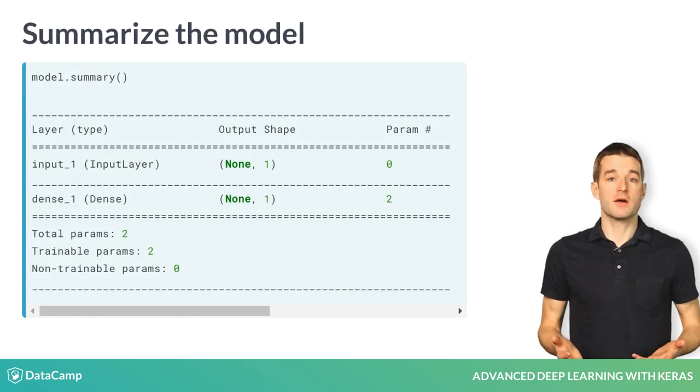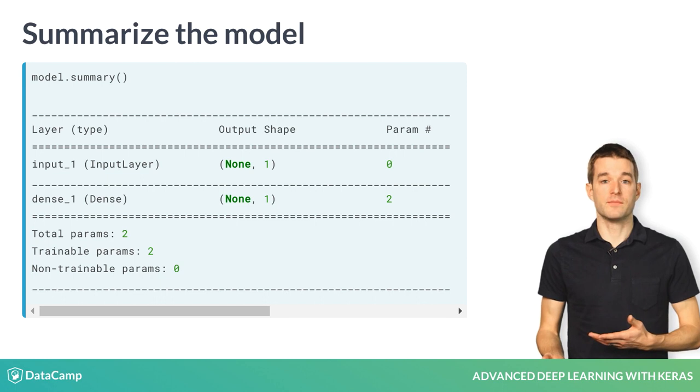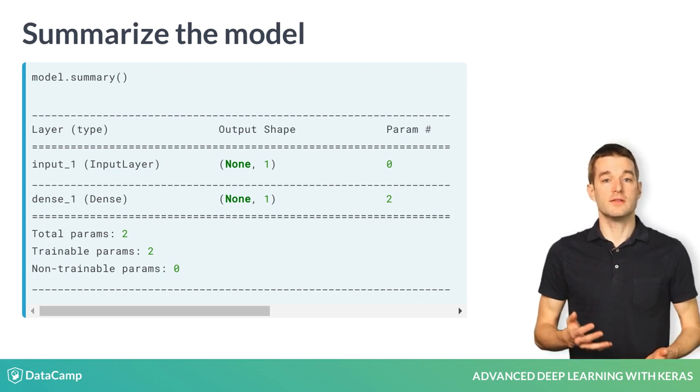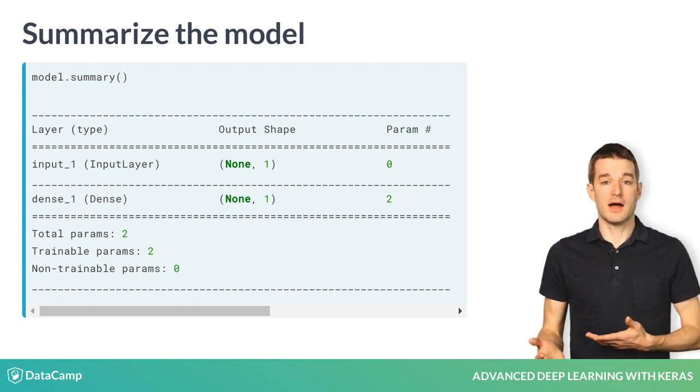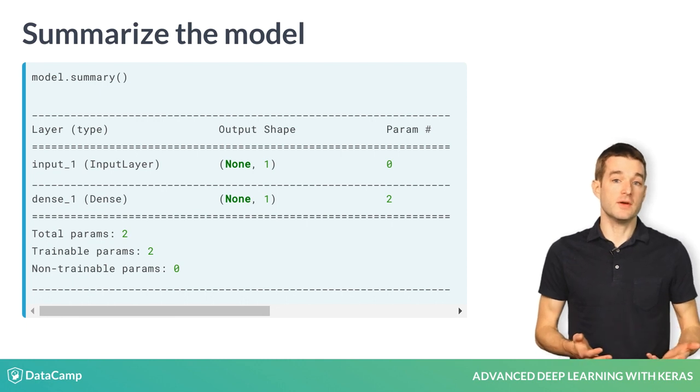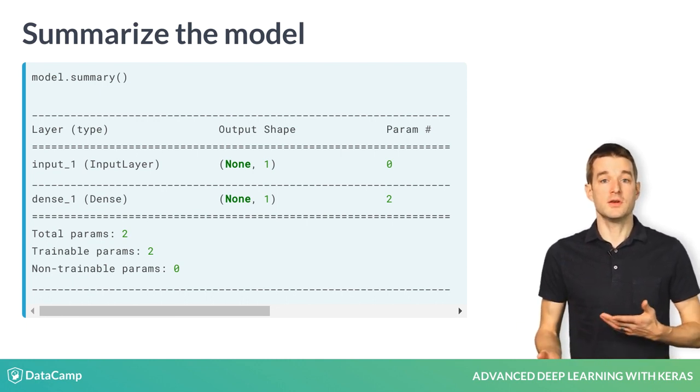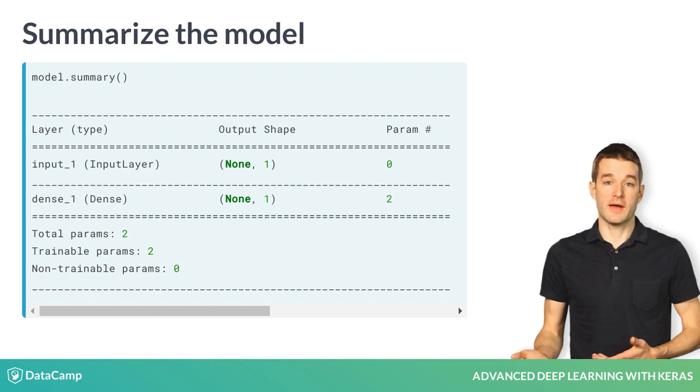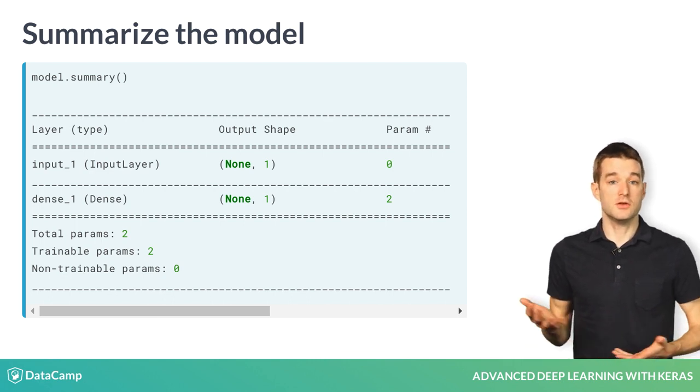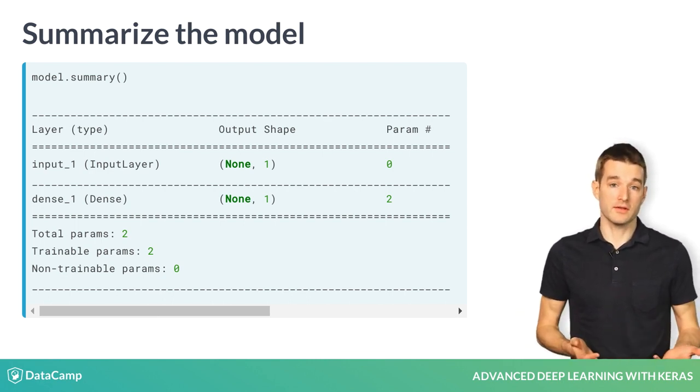Before fitting my models, I also like to summarize them. You can do this by calling the summary method on the model object. This gives you a nice table of the layers in the model, so you can confirm they are as you expect. In this case, you can see your input layer and your output layer.